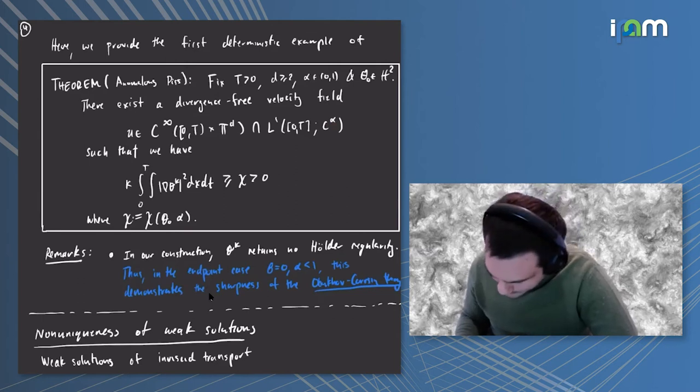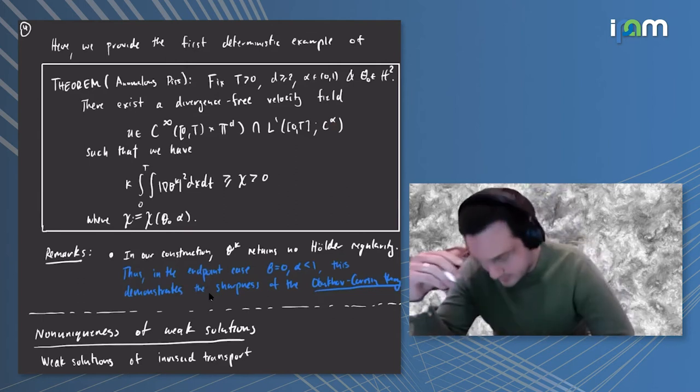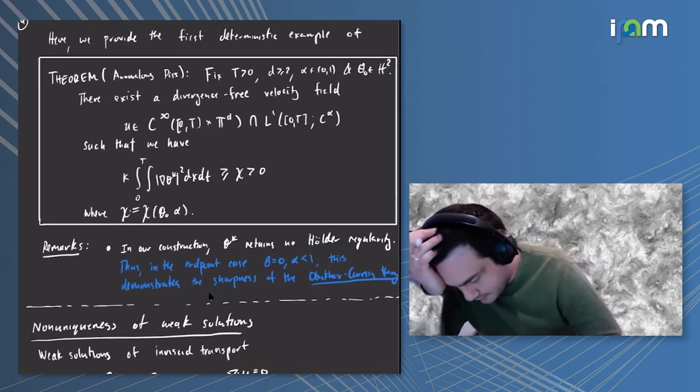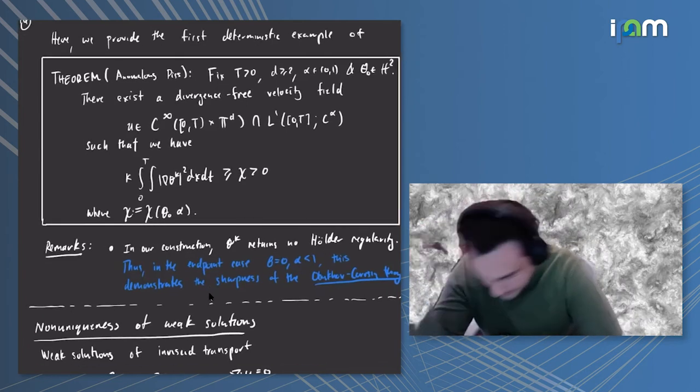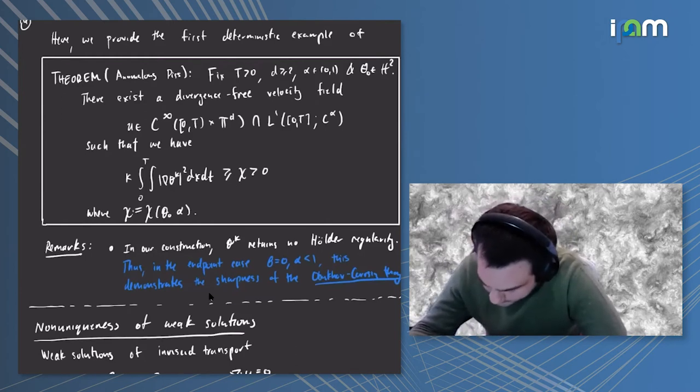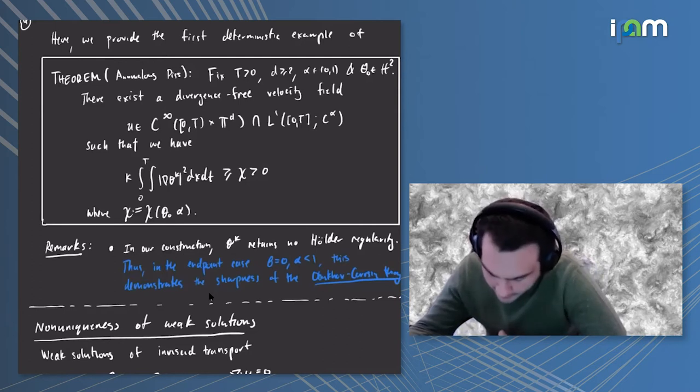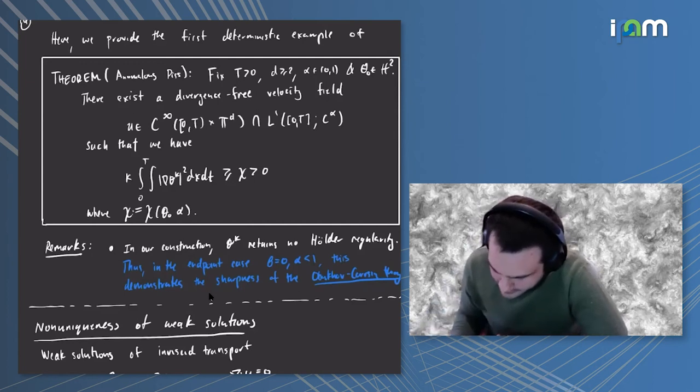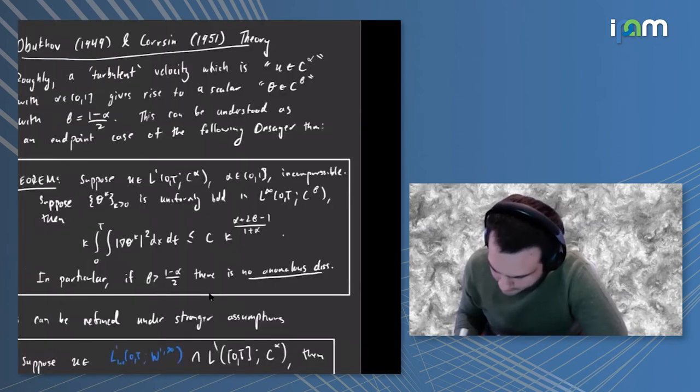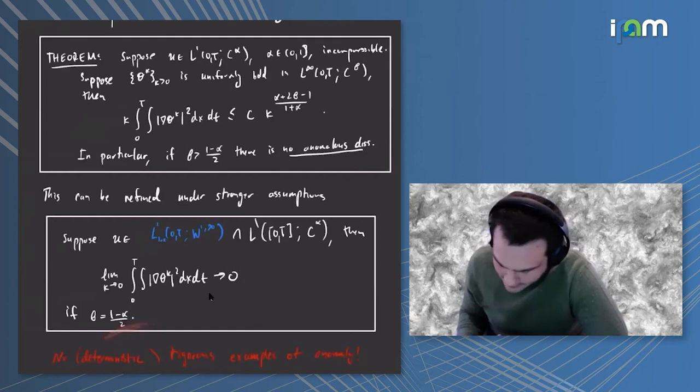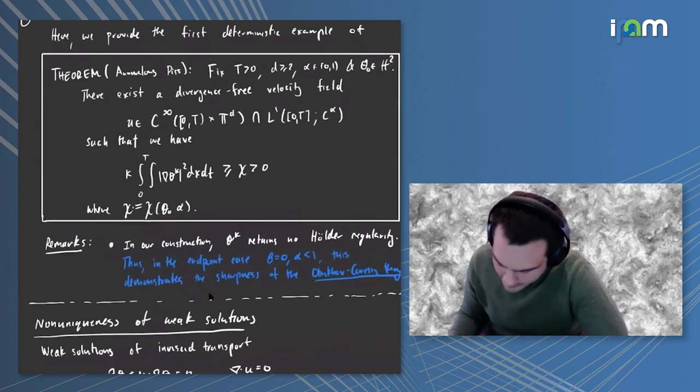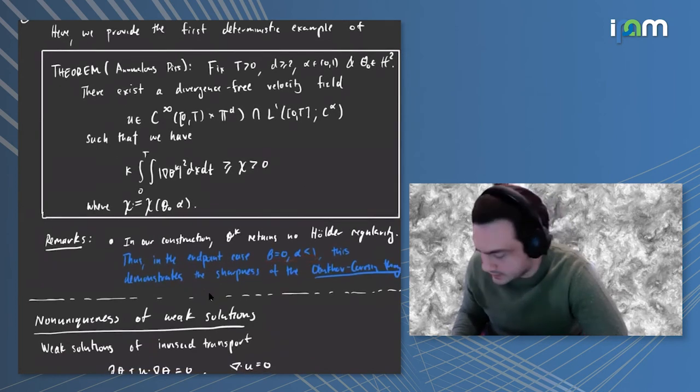The first remark is that in our construction the scalar field retains no Holder regularity whatsoever. In fact, what it shows is that this endpoint case, where alpha is allowed to be arbitrarily close to one and beta is zero for us, this endpoint case is sharp.